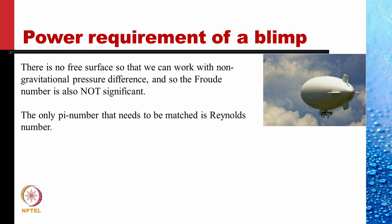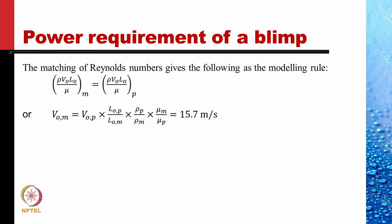The only pi number that needs to be matched is Reynolds number. Matching Reynolds number means the value for the model is set equal to the value for the prototype. From this, we get the velocity of the model should be 15.7 meters per second, using 10 meters per second for the prototype velocity. The length ratio L_p over L_m is 20 (1/20 scale model). We use the density of air divided by the density of water, and viscosity of water divided by viscosity of air.